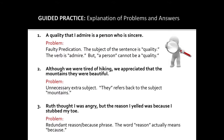Let's review your answers. The error in sentence one was faulty predication. The subject of this sentence is quality. The verb is admire, but a person cannot be a quality, which means that the sentence is not logical. We can revise this sentence by making sure that the subject, quality, does indeed reference a quality. Just delete the problematic words and change the ending word so that it fits grammatically in this sentence. This revision works because sincerity is a quality that can be admired.